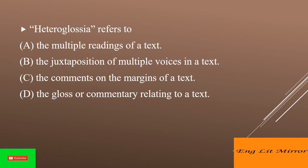Heteroglosia refers to — the answer is Option B — the juxtaposition of multiple voices in a text. The term heteroglosia describes the coexistence of distinct varieties within a single language. It was introduced by the Russian literary theorist Mikhail Bakhtin in his 1934 paper titled 'Discourse in the Novel.' For Bakhtin, this diversity of languages within a single language is not, in a sense, a purely linguistic phenomenon.